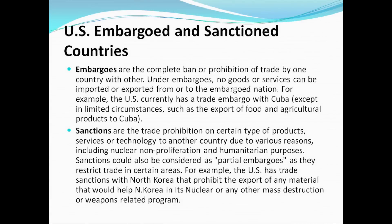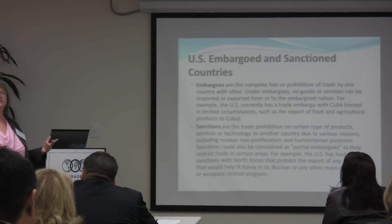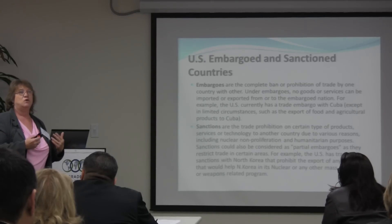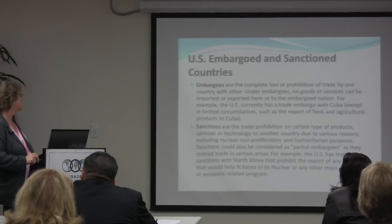An embargo is the complete ban or prohibition of trade, and sanctioned countries are trade prohibitions on certain types of products, countries, or individuals. So that's the difference between an embargo — you're usually going to be denied, period. Iran and Syria are examples of complete denials. You're never going to get a license for there unless there's some kind of real need, and then you have to go get a presidential approval. You can't go through the State Department; you have to go straight to the president.